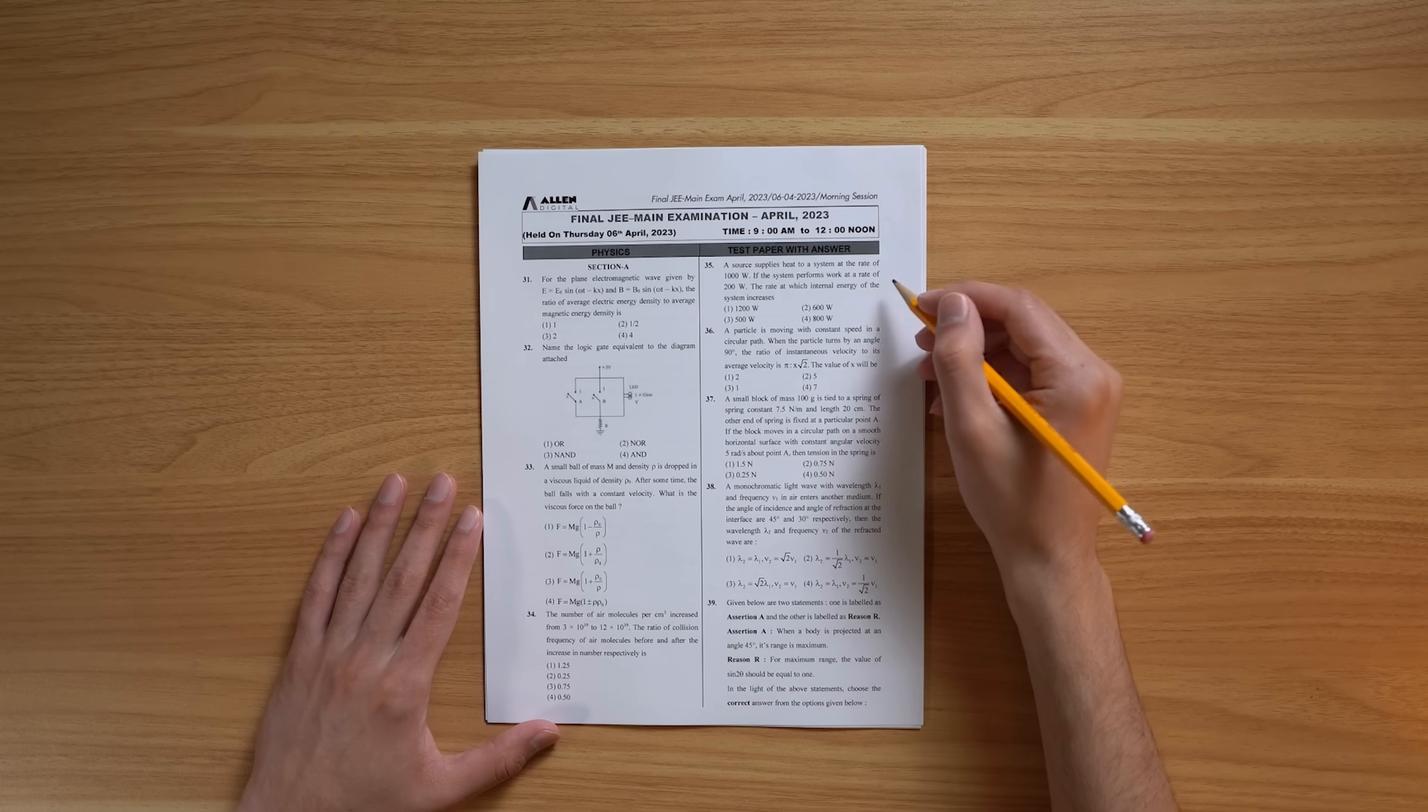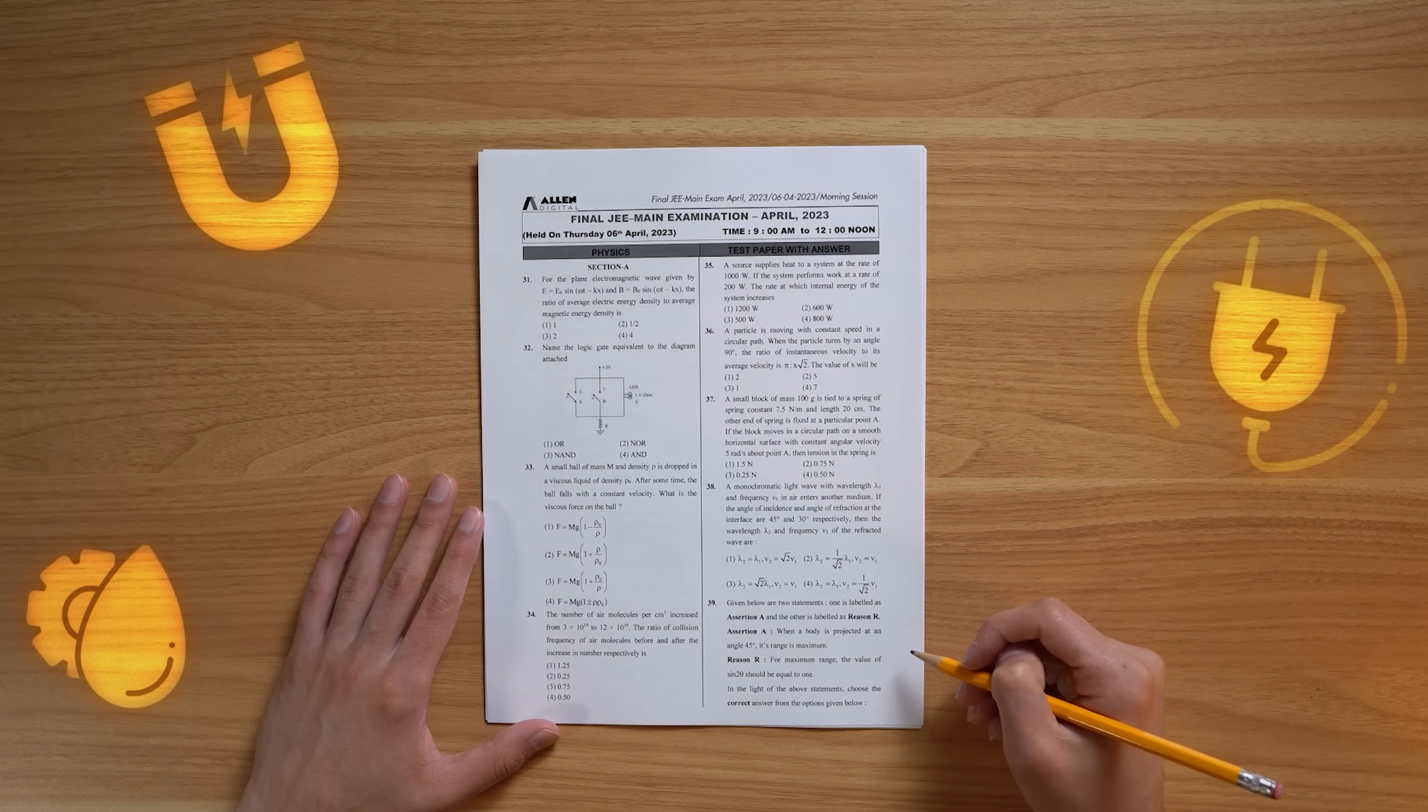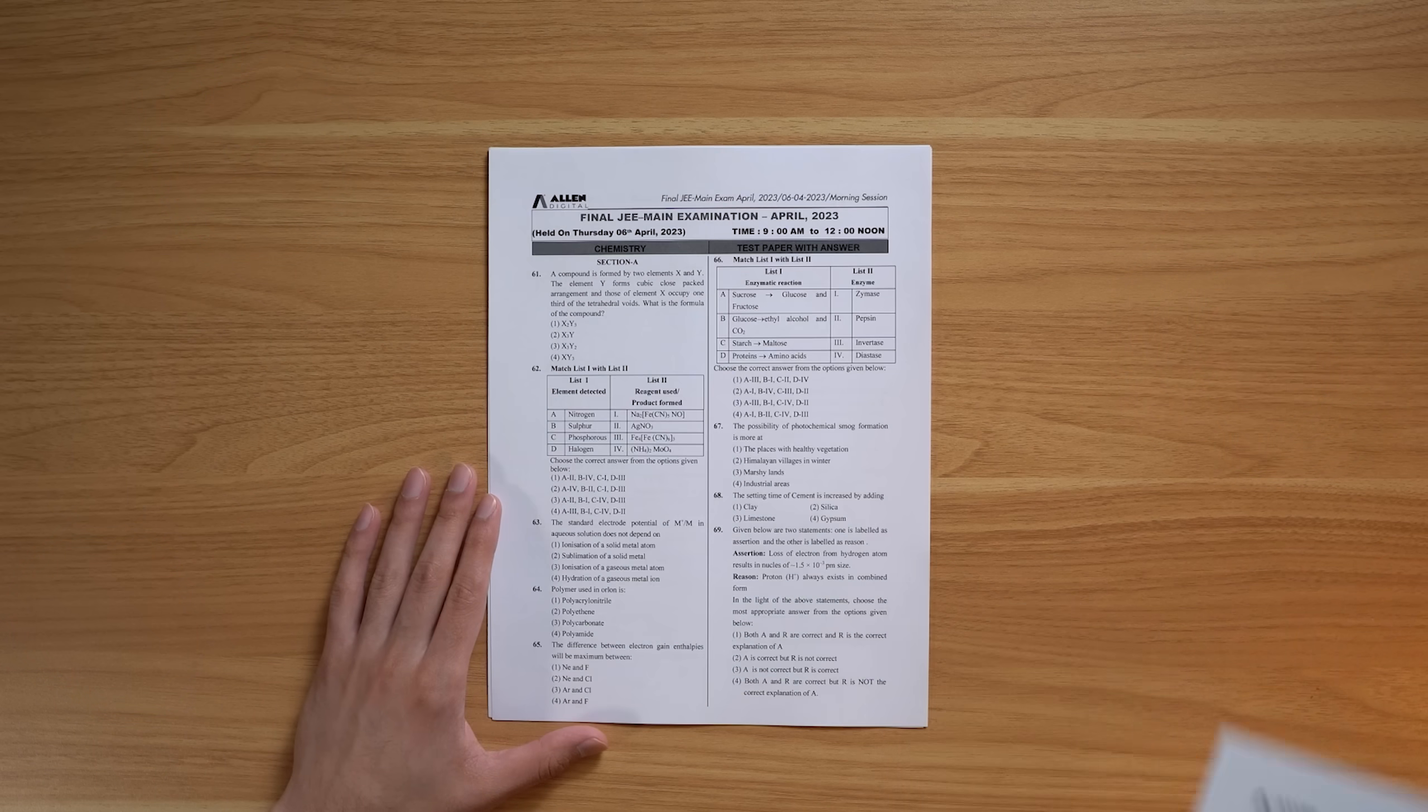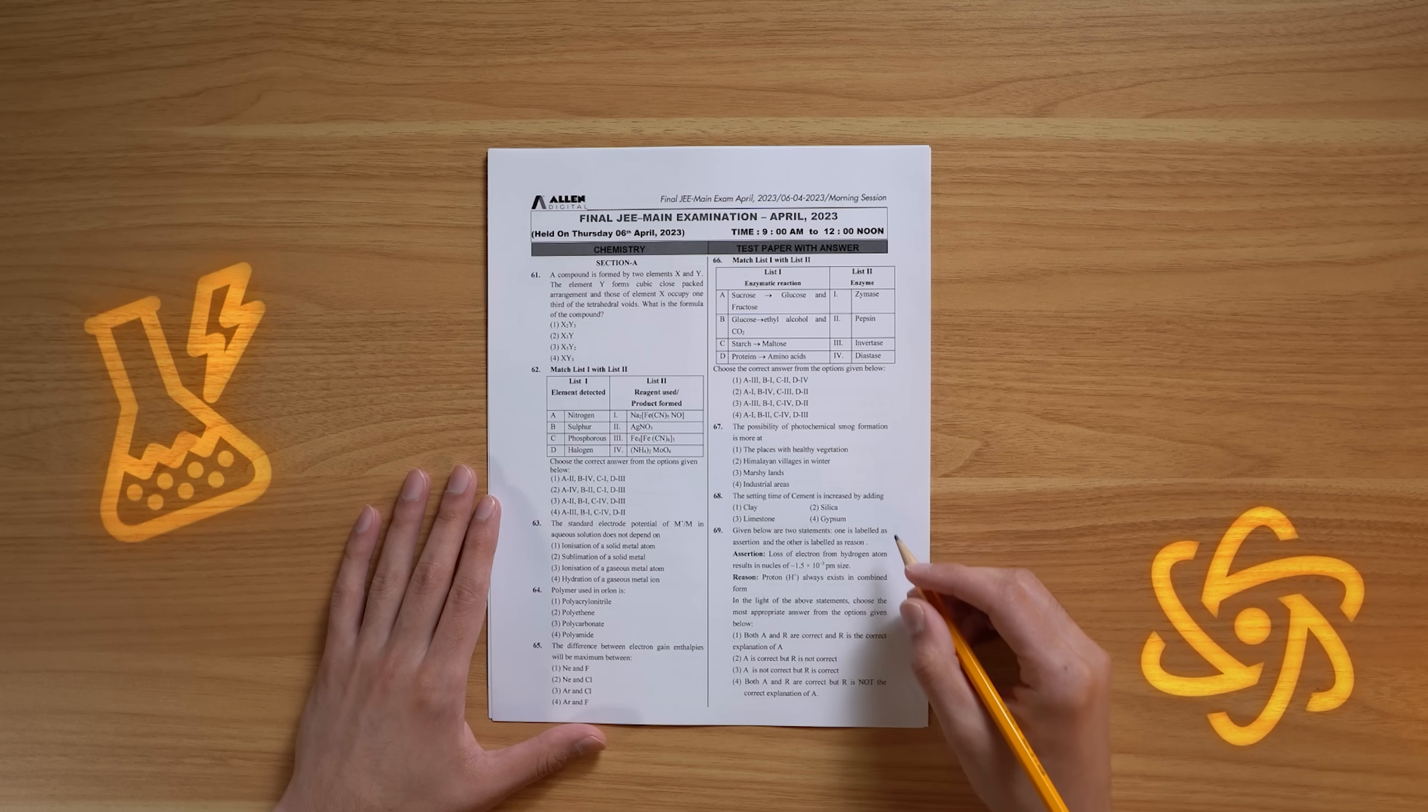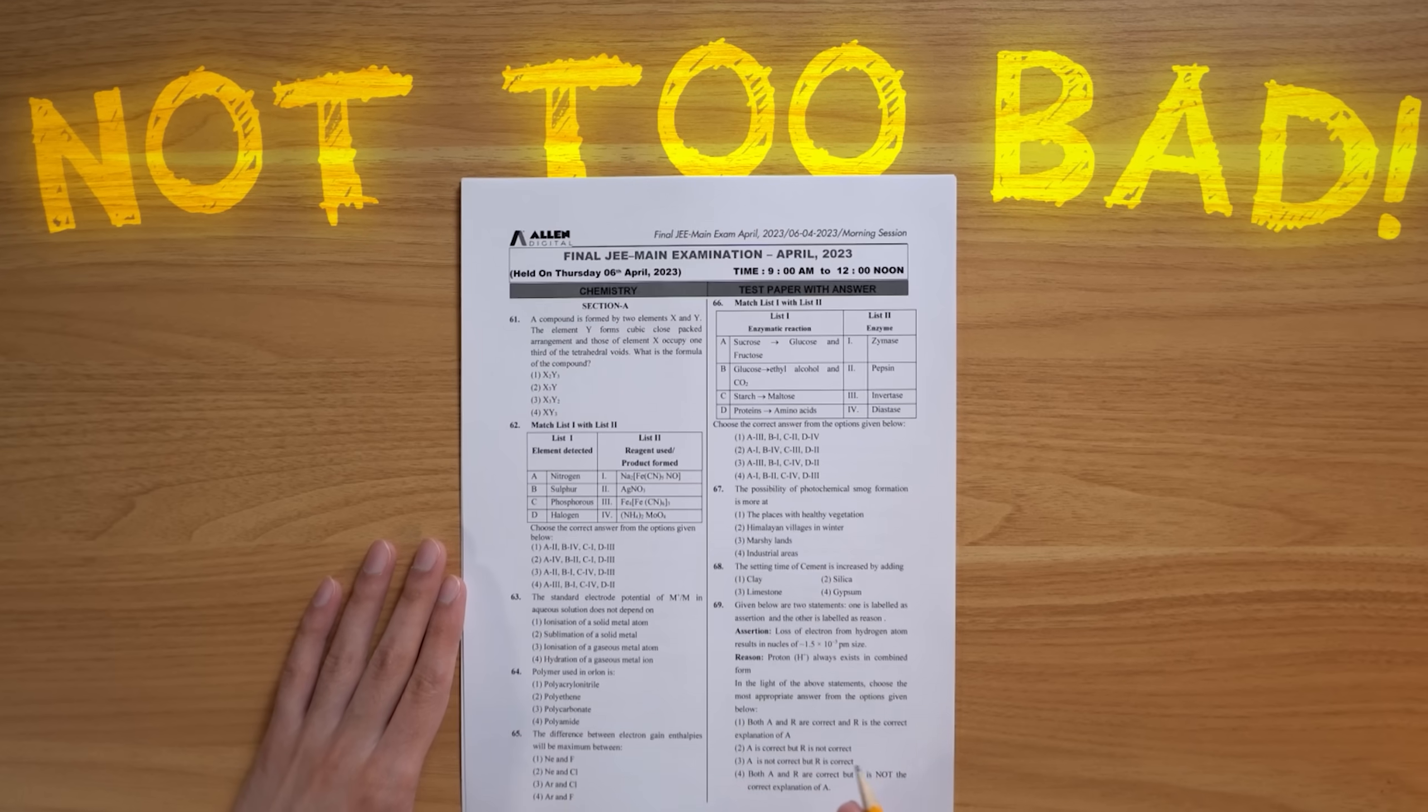Now we glossed over a lot of the math there, but I just wanted to show you how involved these questions can get. And that was just question number two, by the way. Now let's quickly look at some example physics problems. We're dealing with electromagnetism, digital electronics, fluid dynamics. These questions span almost every major area of physics. And same goes for the chemistry questions. Right on the first page, we have solid state chemistry, electrochemistry, organic chemistry. These questions make AP chem seem not too bad.